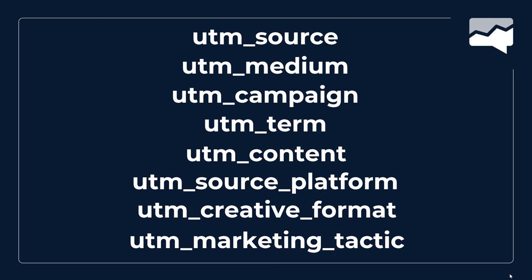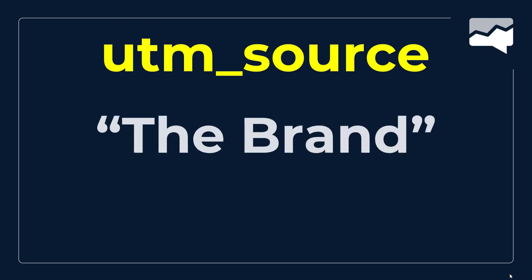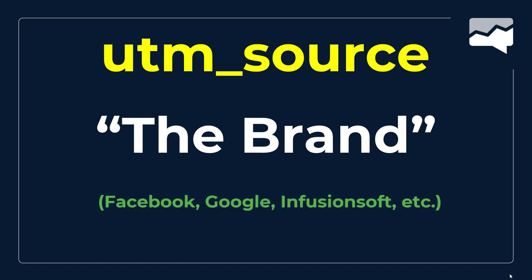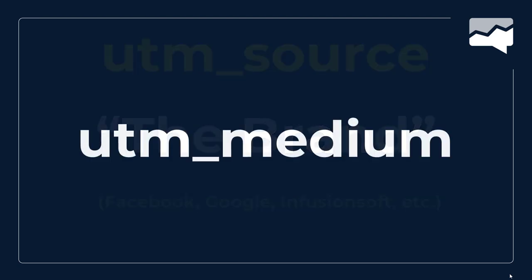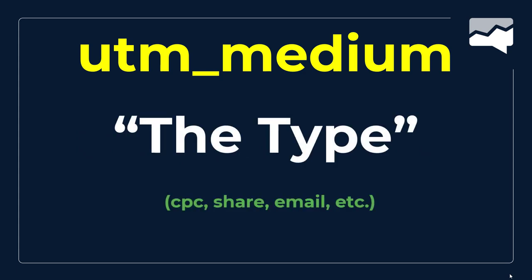For UTM Source, the way we like to think of it is: it's the brand. That could be Google, Facebook, or for email it could be something like Infusionsoft or Active Campaign. The UTM Source is the brand — keep it nice and simple. For UTM Medium, this is where you talk about the type of traffic: is it CPC or is it a share? With Facebook, you can identify if it's paid or shared. Same with email — you can identify email traffic against paid or any other type. So the medium is the type.